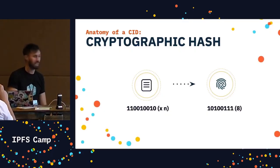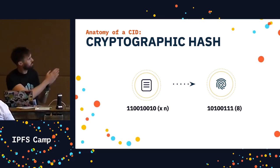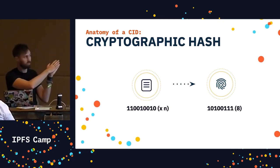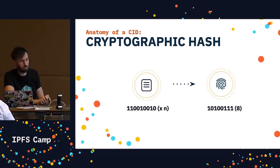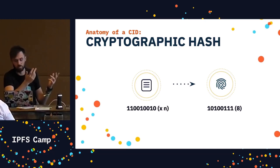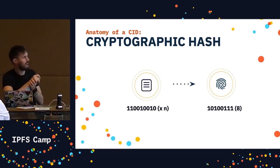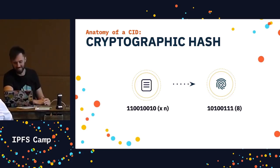It all starts with a cryptographic hash. A cryptographic hash function maps input of arbitrary size to output of a fixed size. We want a few properties: the same data should always produce the same hash — so it's deterministic. It should be impossible to invert, meaning we shouldn't be able to reconstruct the data from the hash. It should also be unique, so no two different files should produce the same hash.